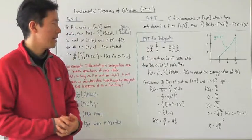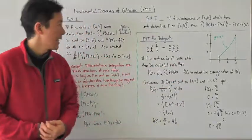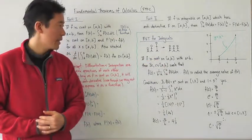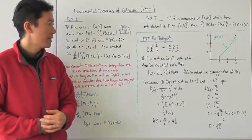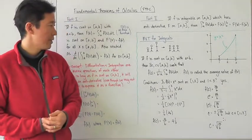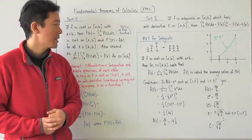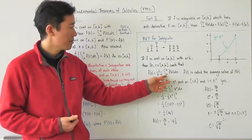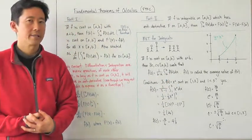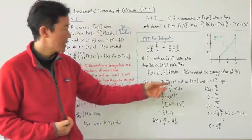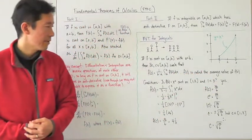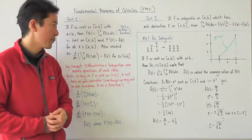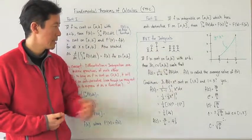Applying that now to integrals: the mean value theorem for integrals states that if f is continuous on a closed interval [a, b] with a less than b, then there exists a c on that closed interval such that f of c is going to be equal to one over b minus a times the definite integral from a to b of f of x, dx. F of c is called the average value of f of x.